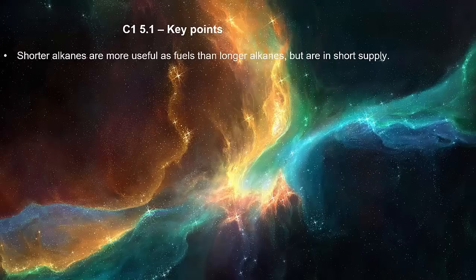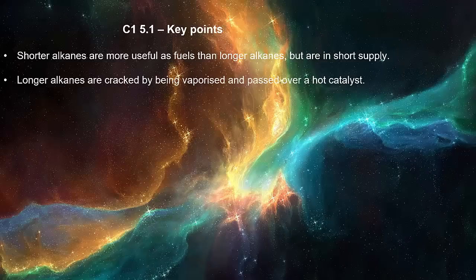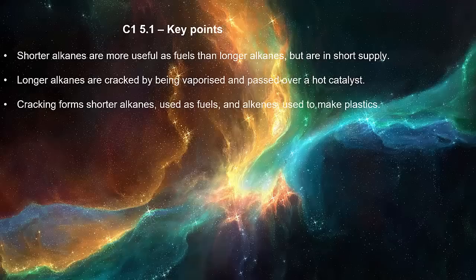Shorter alkanes are more useful as fuels than longer alkanes, but are in short supply. Longer alkanes are cracked by being vaporized and passed over a hot catalyst. Cracking forms shorter alkanes used as fuels and alkenes used to make plastics.